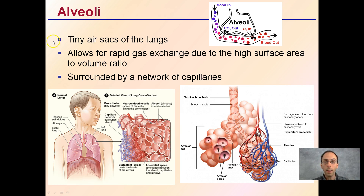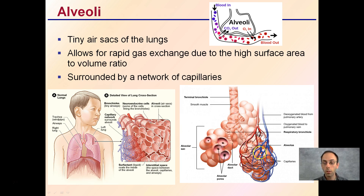These alveoli are tiny sacs in the lungs — you can see them here — allowing CO2 and oxygen to be exchanged. This allows for rapid gas exchange due to the extremely high surface area to volume ratio that they have. They're also surrounded by a network of capillaries, as this image does a great job showing. We want these blood vessels to be very thin, allowing red blood cells to travel one by one for the maximum rate of gas exchange — CO2 diffuses out and oxygen diffuses in.